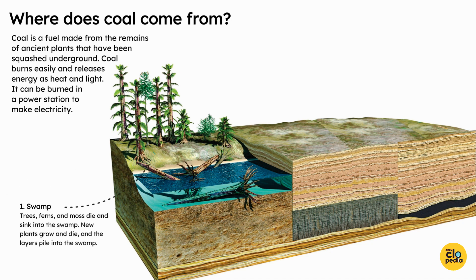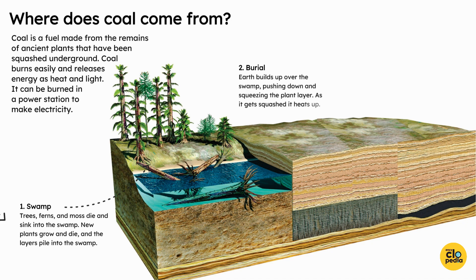1. Swamp: Trees, ferns, and moss die and sink into the swamp. Plants grow and die and the layers pile up into the swamp.